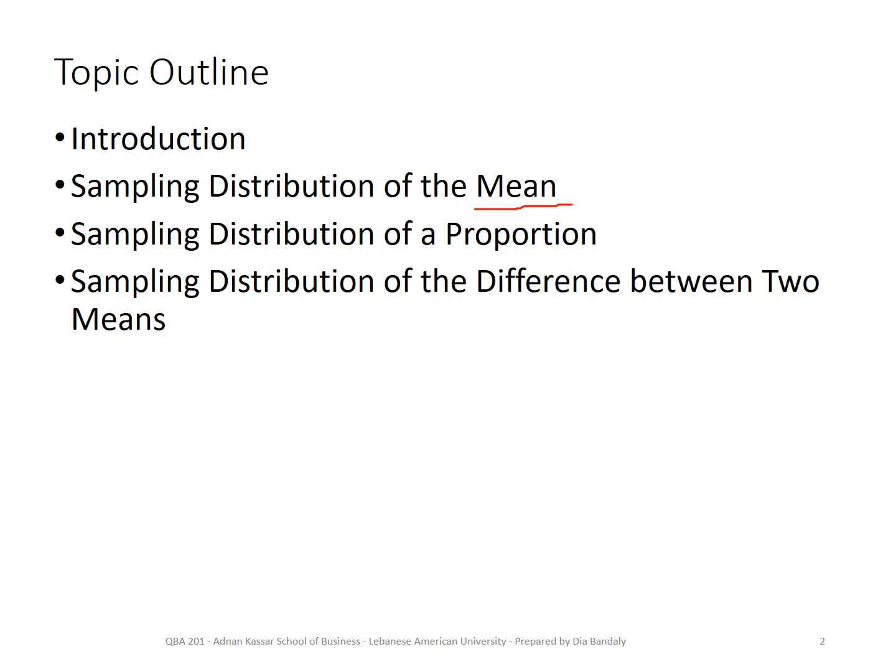Then we're going to talk about the distribution of the proportion — the number of values divided by a total number. And finally, we're going to talk about a variable which is a difference between two means. Don't be scared with these terms; as you will see later, everything will boil down to answering a probability statement about a normally distributed variable. I promise you that.